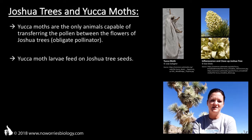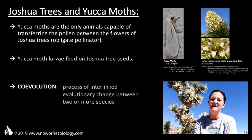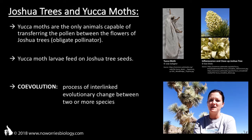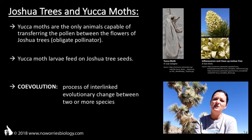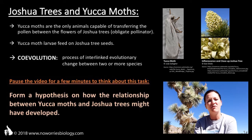This is an excellent example of co-evolution. Co-evolution refers to a process of interlinked evolutionary change in two or more species. As a result, these species become specialized for their mutual relationship. Can you come up with a hypothesis for how this relationship between the yucca moth and the Joshua tree might have developed?